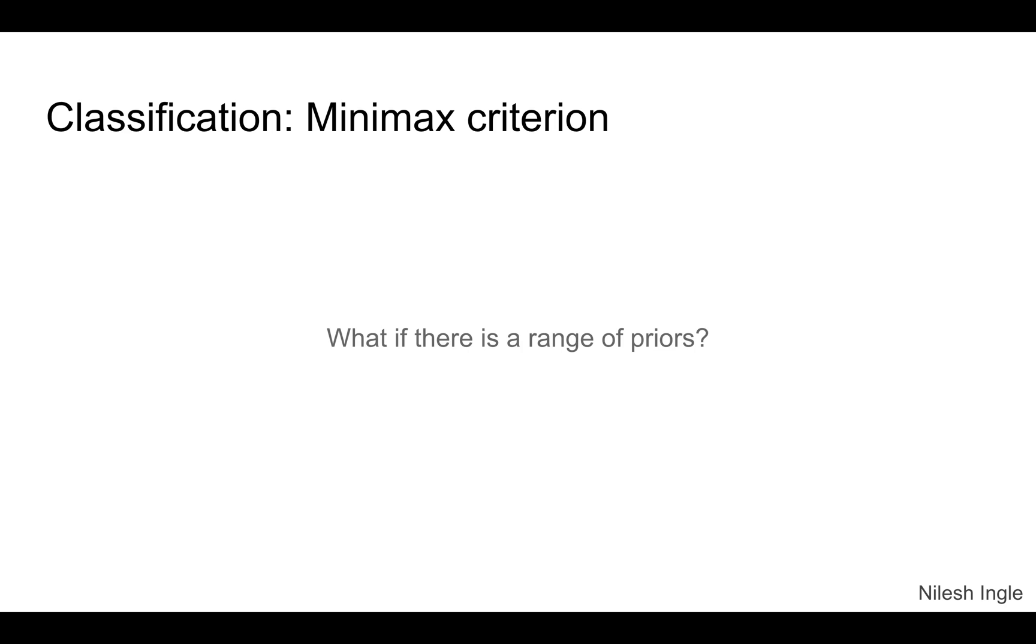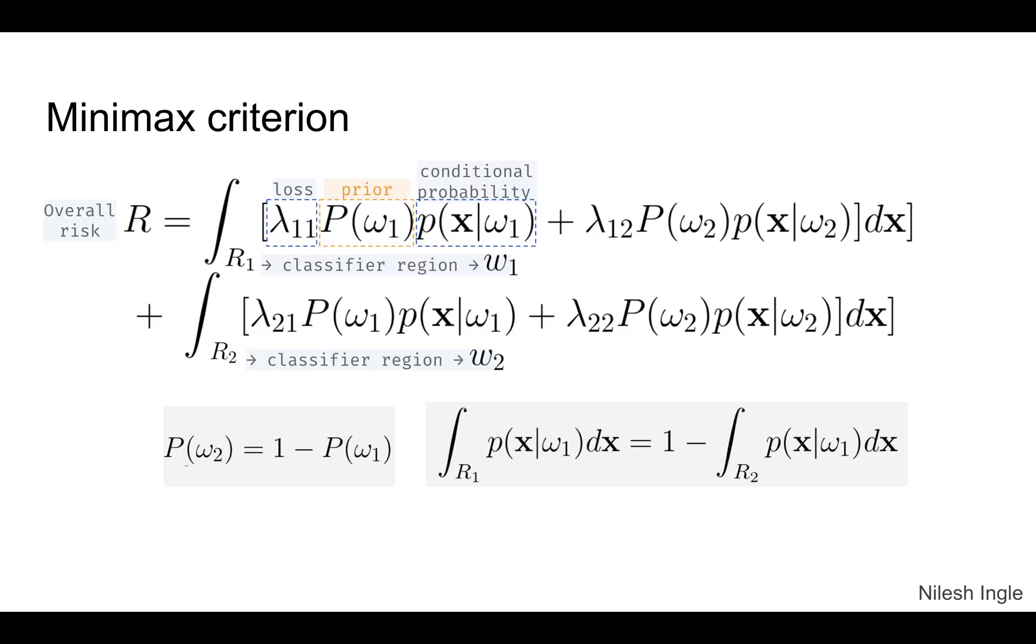So there could be other information associated with this, or this could be learned information by the model or past data that could be used as a prior to classify the next set of images. And so the minimax classification is given here.